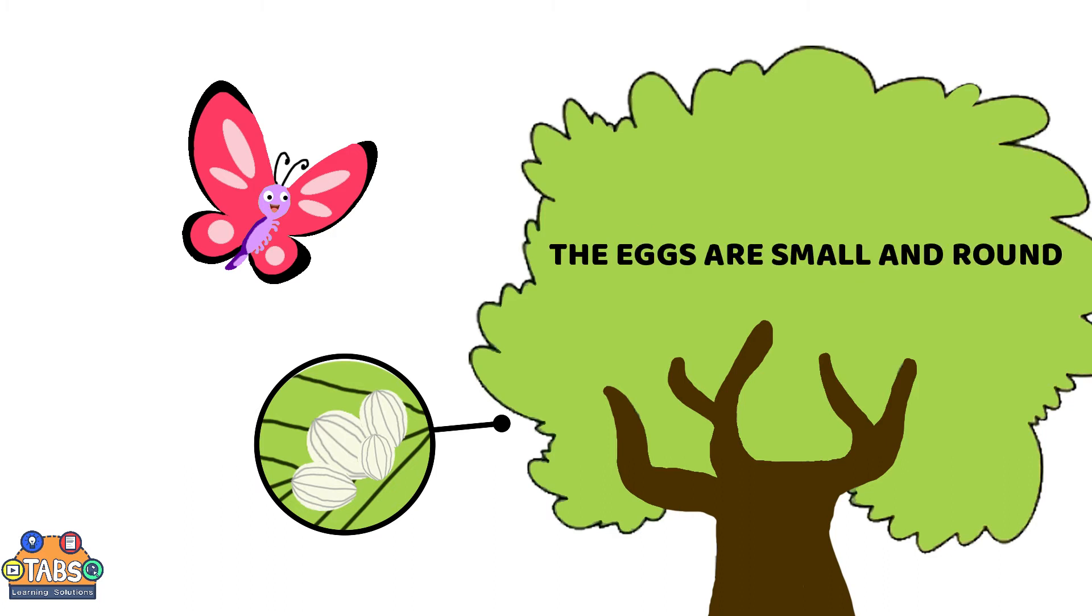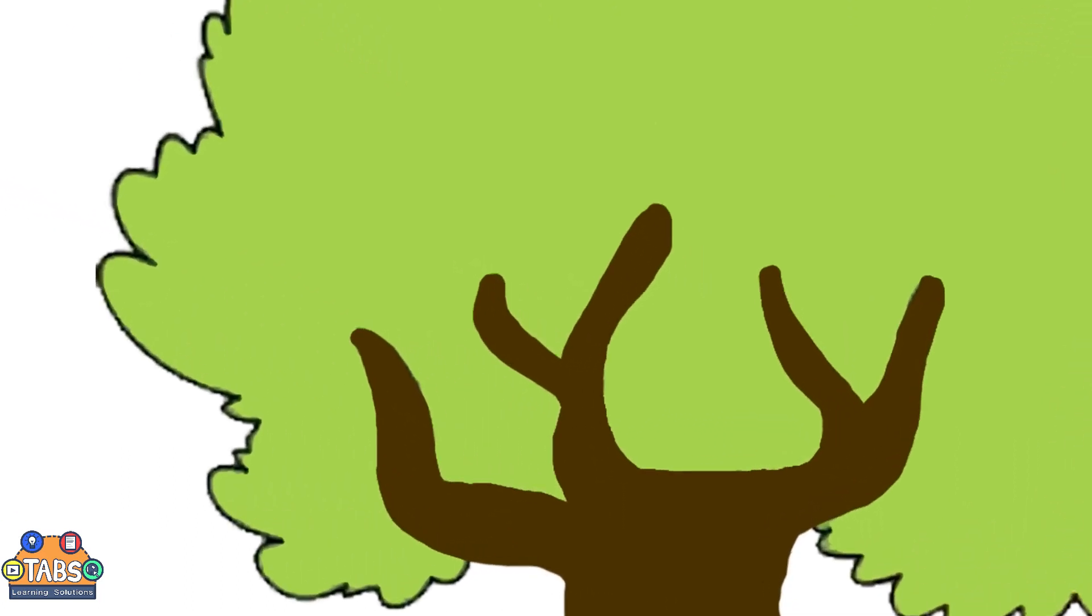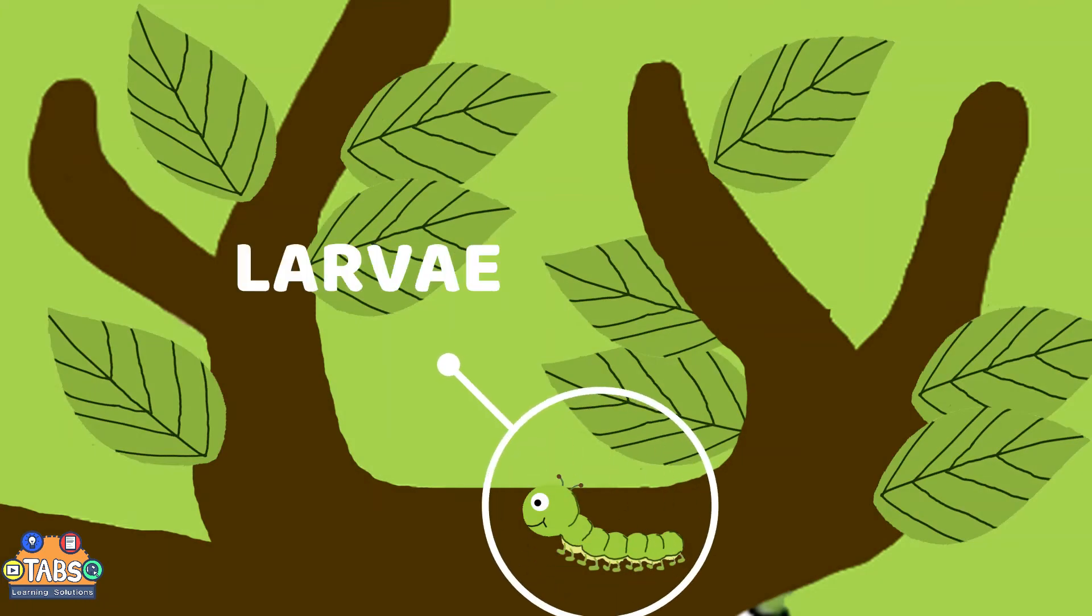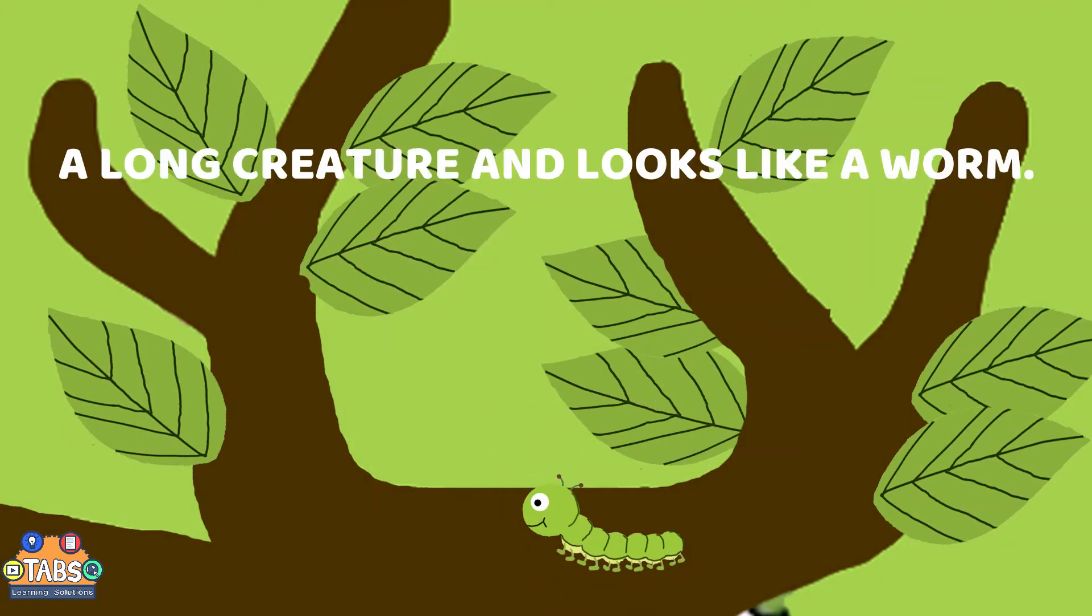The eggs are small and round, and the eggs hatch into caterpillars called larvae. It's a long creature and looks like a worm.